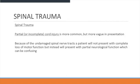Partial or incomplete cord injury is more common but more vague in presentation. Because of undamaged spinal nerve tracts, the patient will not present with a complete loss of motor function, but instead will present with partial neurological function, which can be confusing.